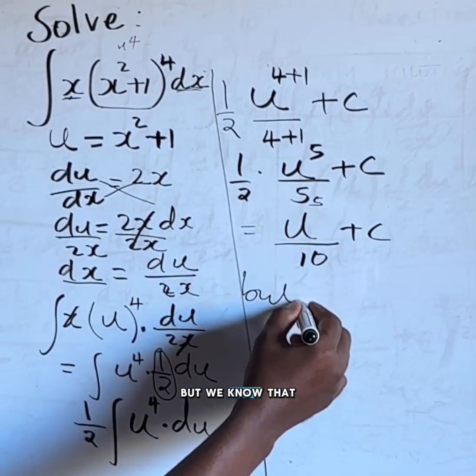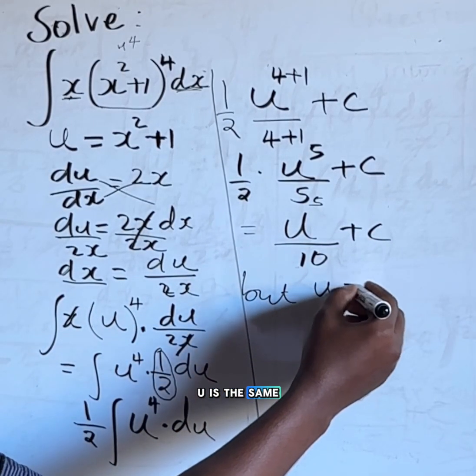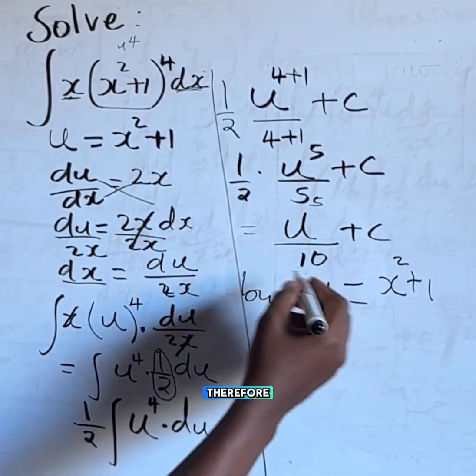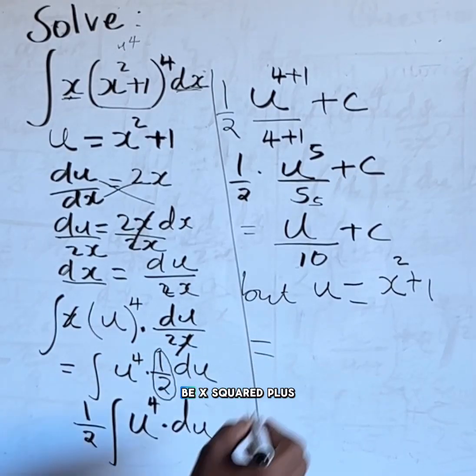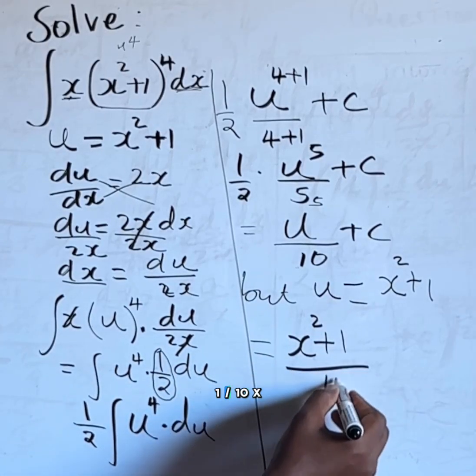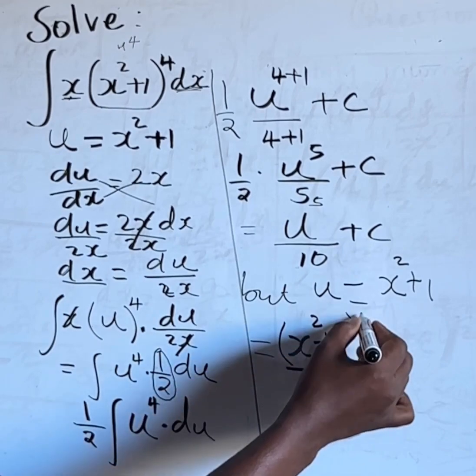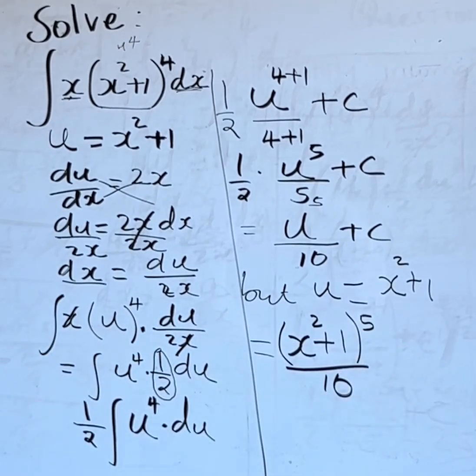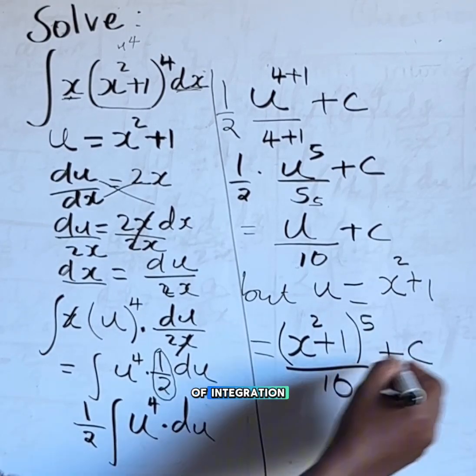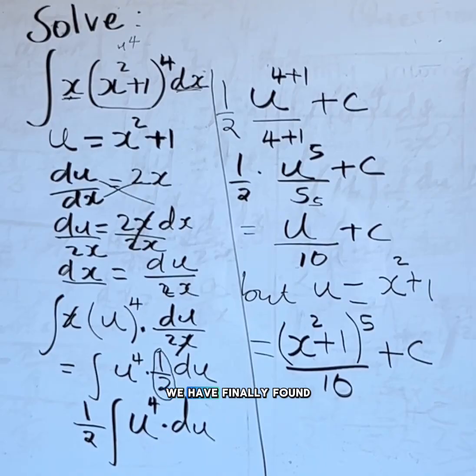But we know that u is the same as x squared plus 1. Therefore our final solution will be x squared plus 1 raised to the power of 5 divided by 10 plus the constant of integration. So by using substitution method we have finally found the integral of x multiplied by x squared plus 1 raised to the power of 4 with respect to x.